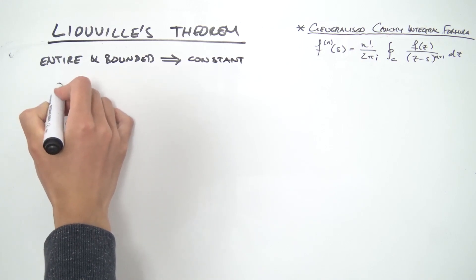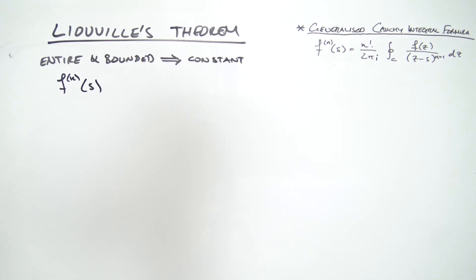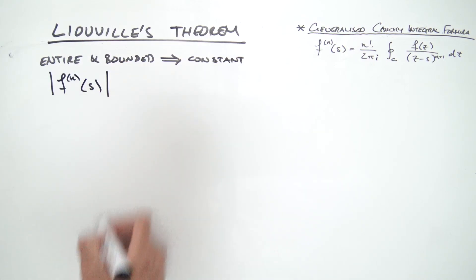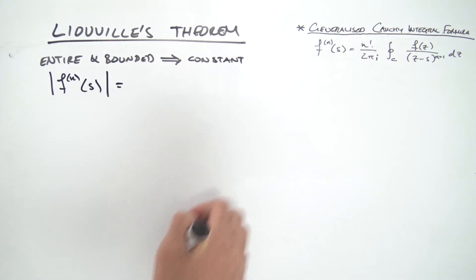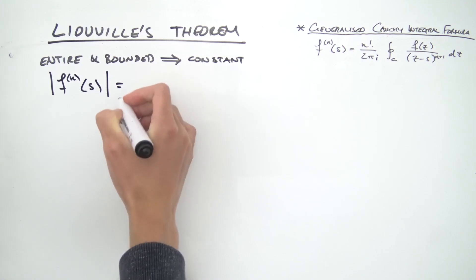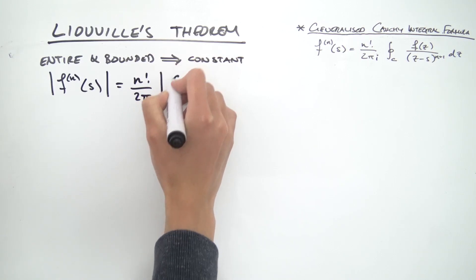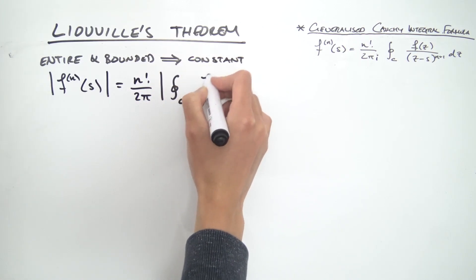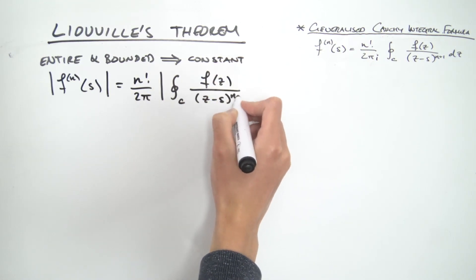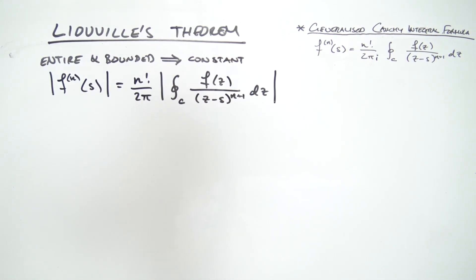We start with f^(n)(s), the nth derivative of our complex function, and take the absolute value. This equals — ignoring the factor of i since |i| = 1 — n factorial over 2π times the absolute value of the contour integral over C of f(z) divided by (z − s)^(n+1), integrated with respect to z.